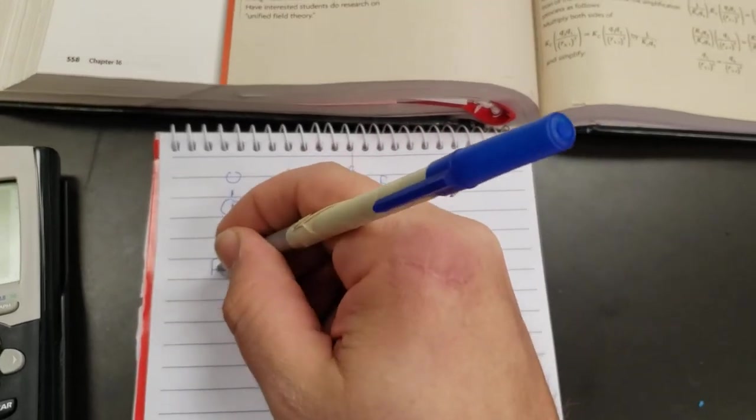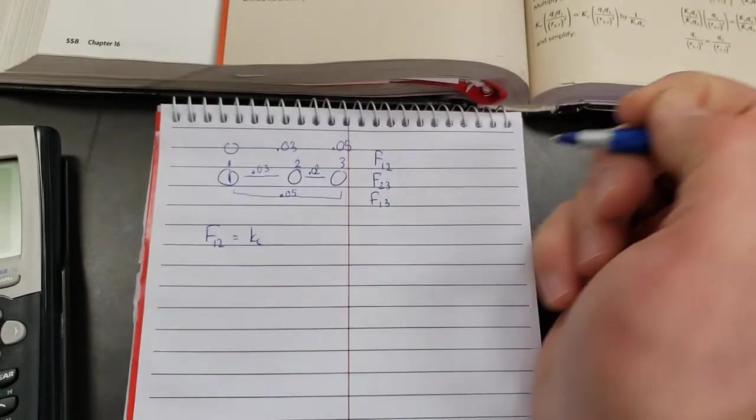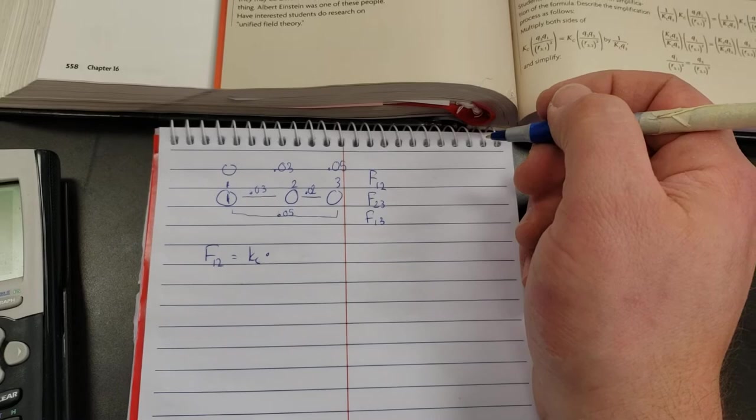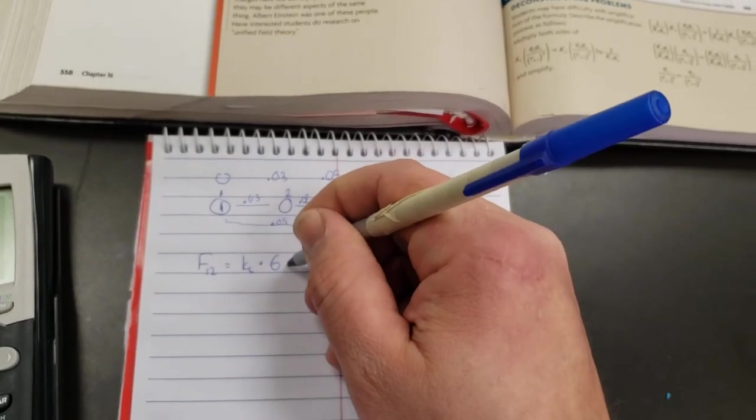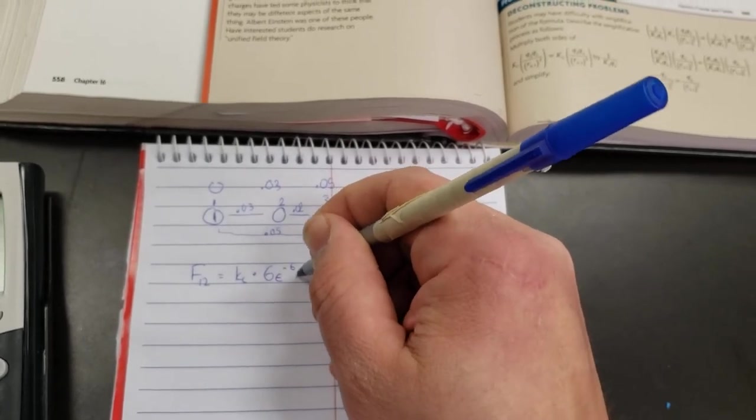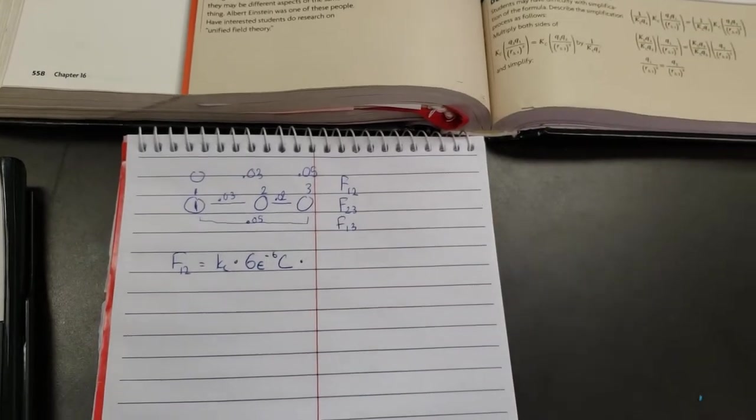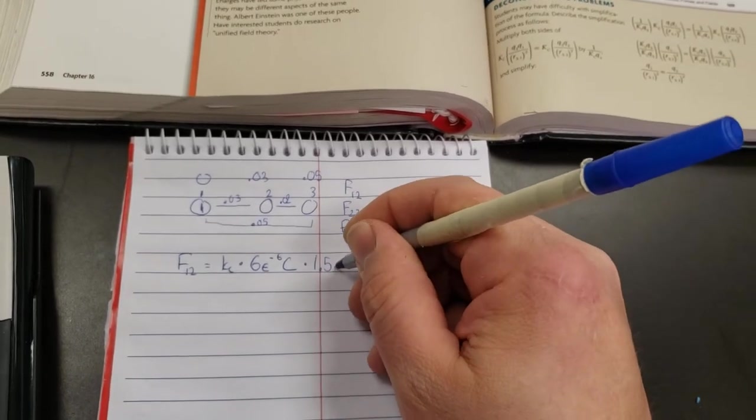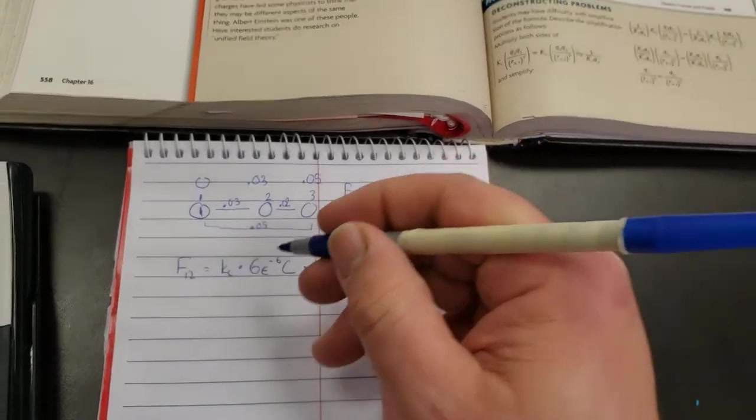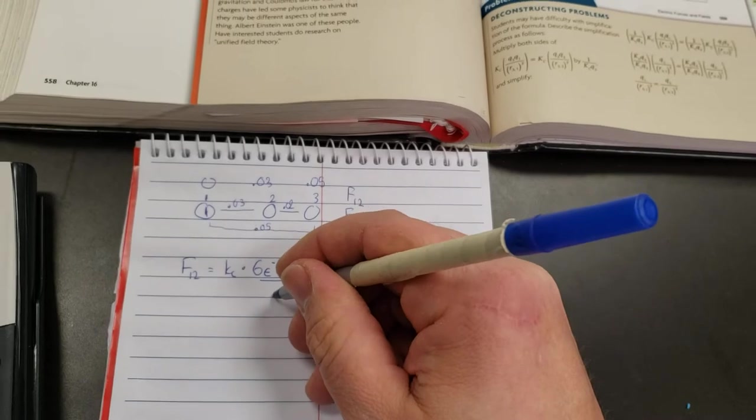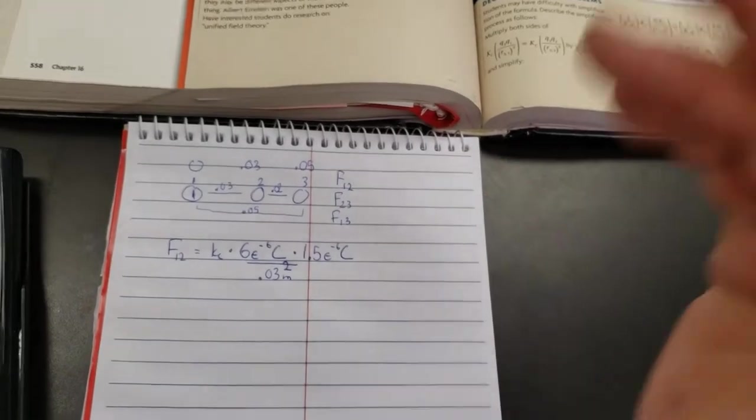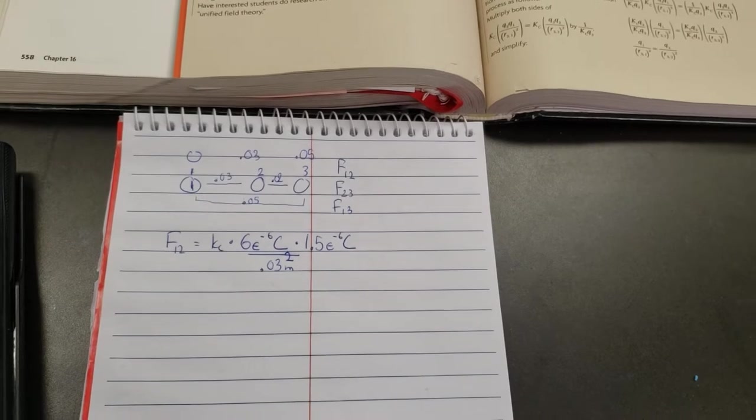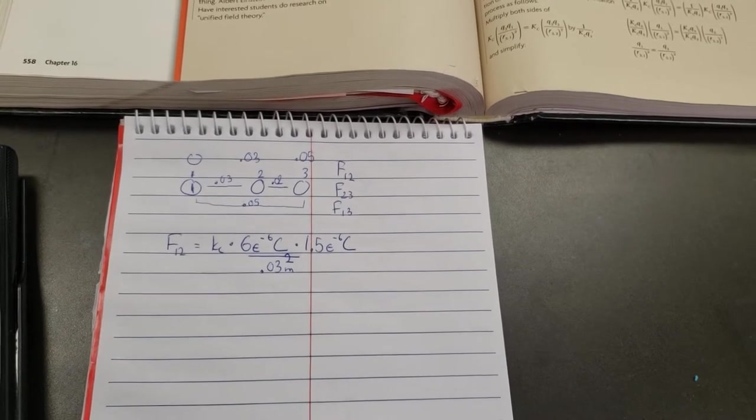So, let's set up force 1, 2 together. Force 1, 2 is going to equal Coulomb's constant, that's 8.99 times 10 to the 9th, times charge 1. Charge 1 from the problem is 6 microcoulombs, so 6 microcoulombs times 10 to the negative 6th coulombs, times number 2, the middle charge, is 1.5 microcoulombs. And then we've got to take the distance between them, which is 3 centimeters, 0.03 meters, square that. So you're going to find that number and calculate it, and you'll repeat that process for charges 2, 3 and charges 1, 3, substituting in the appropriate charge and the appropriate distance.